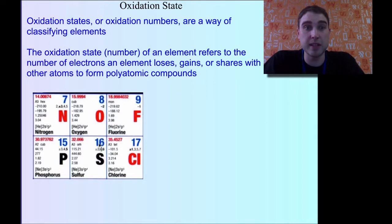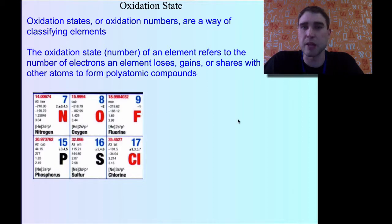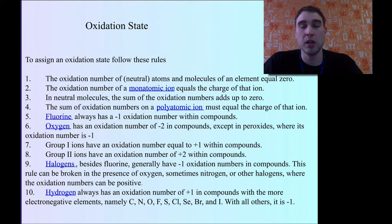Some periodic tables have the oxidation states on them. For example, nitrogen: 2, plus or minus 3, 4, and 5. Fluorine and oxygen: fluorine is minus 1, oxygen is minus 2. And we'll see where that comes from in a second.